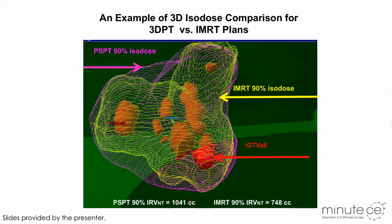An example shown here is that 3D conformal proton actually included a larger volume at the high-dose area. That probably explains why we see slightly increased pneumonitis in that group.